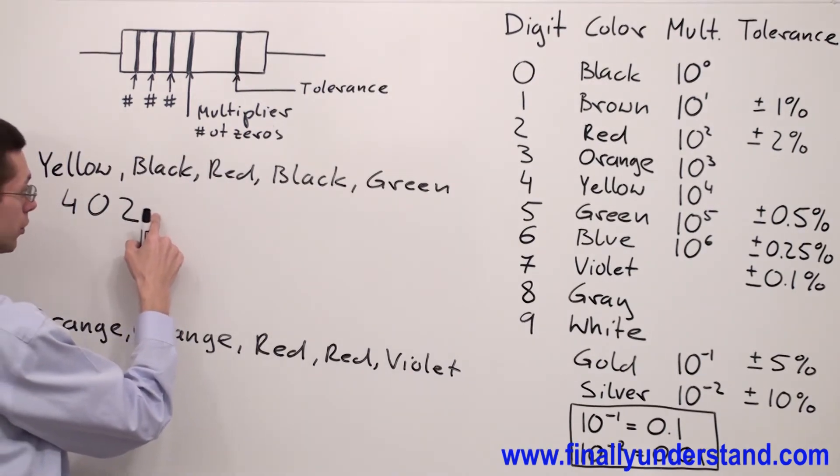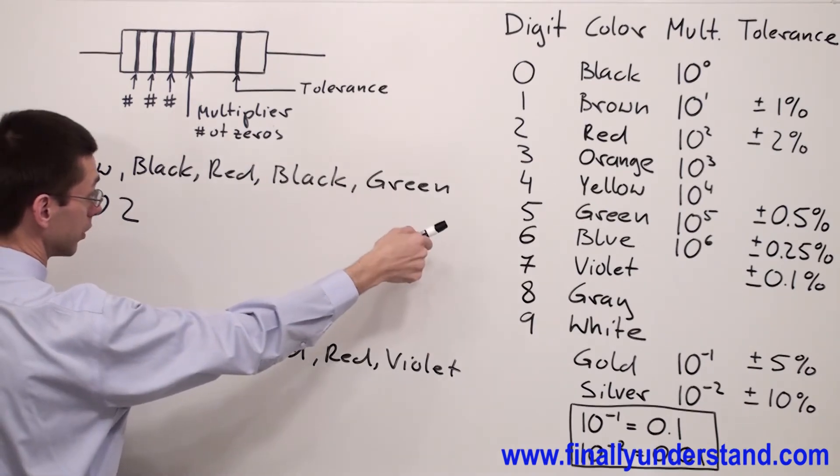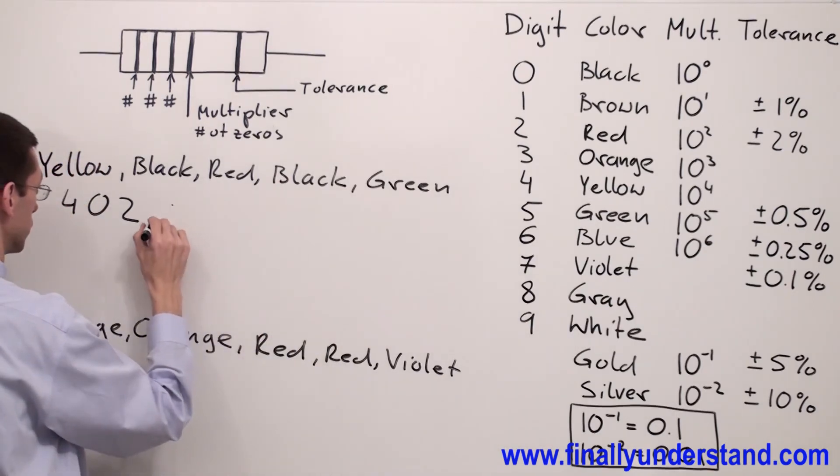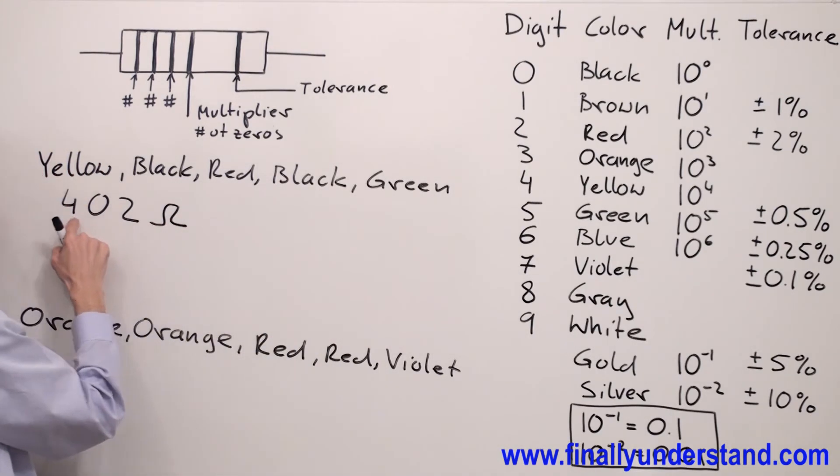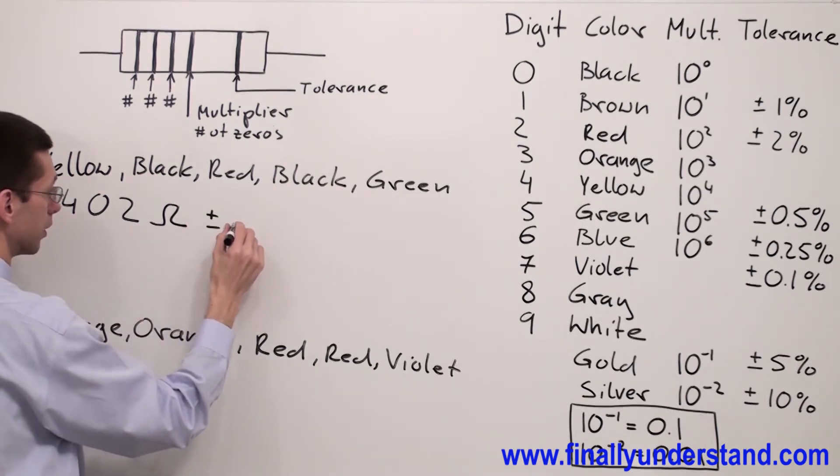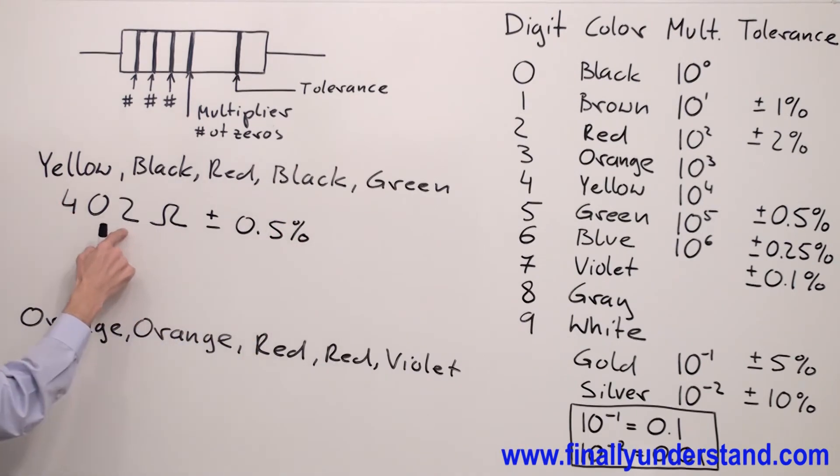I'm going to have tolerance, green. Green represents the tolerance plus minus 0.5%. That's why I'm going to say this is 402 ohms plus minus 0.5%. This is the resistance of this resistor.